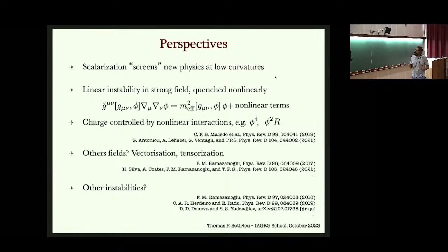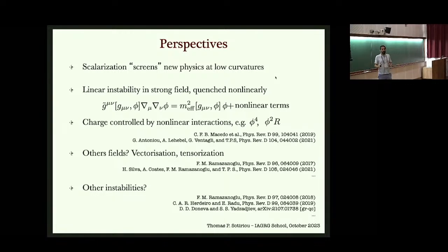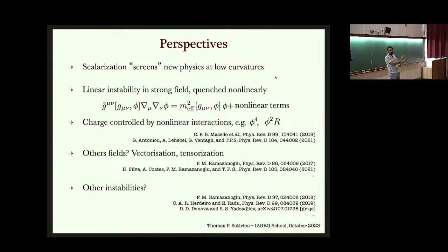To summarize the scalarization part: I presented scalarization as GR solutions becoming tachyonically unstable and growing hair, stabilized non-linearly. This allows certain compact objects to be exactly described by GR while others deviate strongly, with a sharp transition between the two. Observationally, one set of observations might match GR perfectly while a different type of object might reveal a deviation — making it more subtle to find. It also means not all black holes have to be the same even if you deviate from GR.